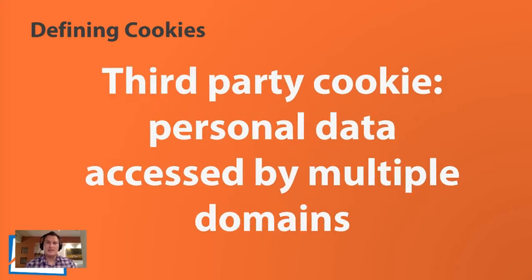There's also something called the third-party cookie, where you can send the data to multiple different domain names and share it across domains and track somebody across the web. That's where things start to get a little bit scary, because you're not just in an implied contract with the person whose website you visited, but now with every other website that's connected to it. The good news is that Google Analytics relies on the first-party cookie, so you're safe there.